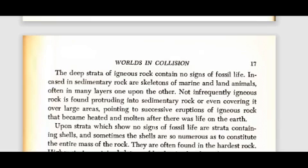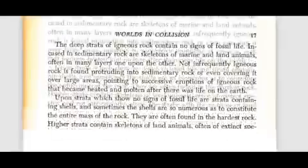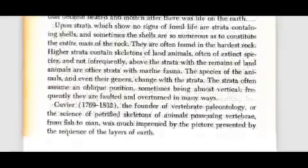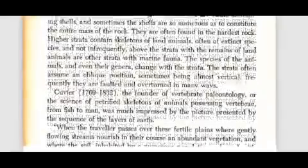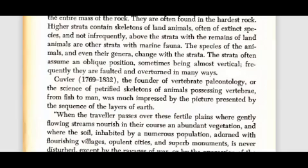Higher strata contain skeletons of land animals, often of extinct species, and not infrequently above the strata with the remains of land animals are other strata with marine fauna. These species of animals and even their genera change with the strata. These strata often assume an oblique position, sometimes being almost vertical; frequently they are faulted and overturned in many ways.